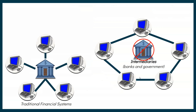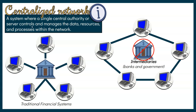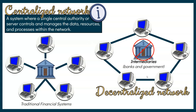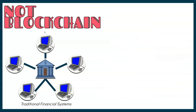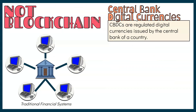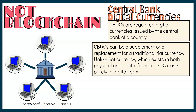Traditional financial systems differ from cryptocurrency as they operate on a centralized network, where a single authority controls and manages data and resources, unlike the centralized nature of cryptocurrencies. An example of digital currency that utilizes centralized networks is central bank digital currencies. CBDCs are regulated digital currencies issued by the central bank of a country. It can be a supplement or a replacement for a traditional fiat currency. Unlike fiat currency, which exists in both physical and digital form, a CBDC exists purely in digital form. Over 130 countries are now experimenting with CBDCs.